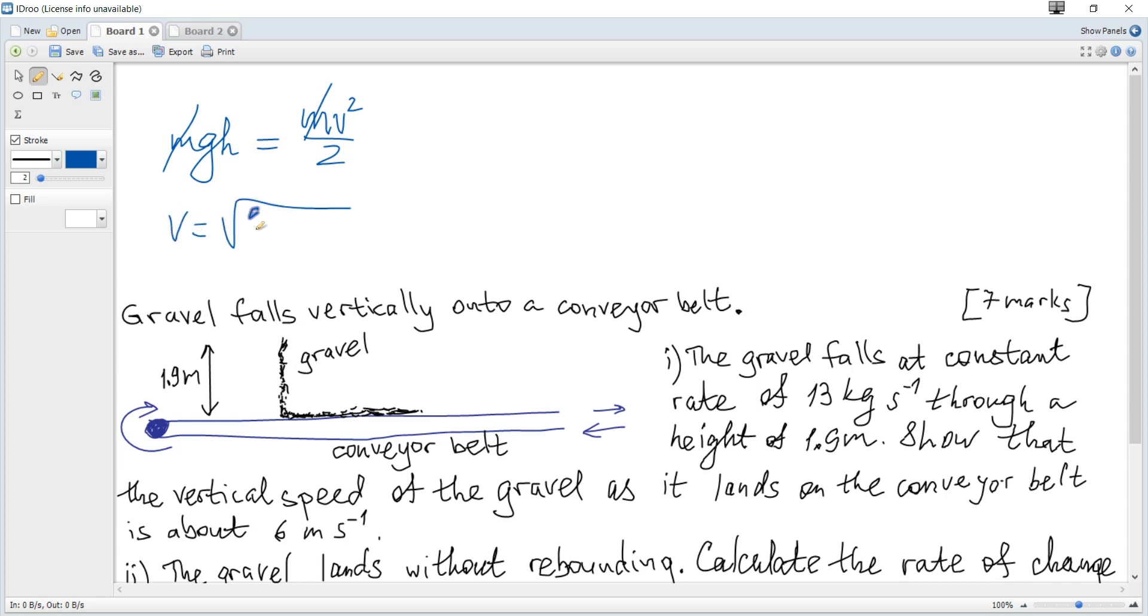Which is equal to the square root of 2 multiplied by 9.8 multiplied by 1.9. And which is equal to...